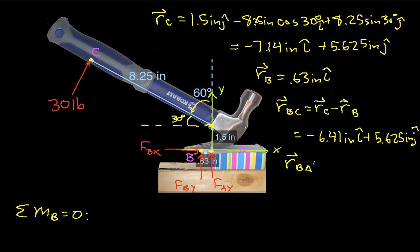And RBA, that is the vector from B to the origin, will be just negative. Actually, this guy up here should be negative, because I'm going from the origin to here. So it'll be negative RB, which is 0.63 inches. Okay, I apologize for this negative sign. That was a stupid mistake, which you'll see that I make a lot of.